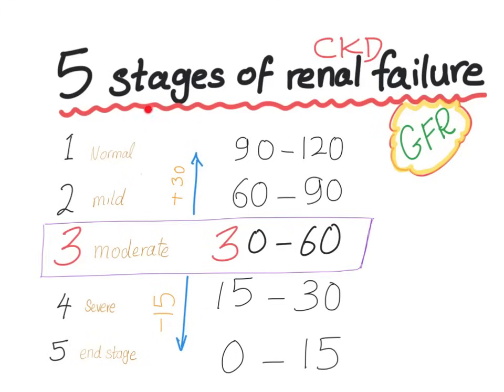Medicosis Perfectionalis. Let's talk about the five stages of chronic kidney disease. It was known in the past as chronic renal failure, but today it's known as chronic kidney disease, which is more accurate. This classification 1 through 5 depends on the GFR, where 1 is kind of normal and 5 is end-stage kidney disease, which is terrible.